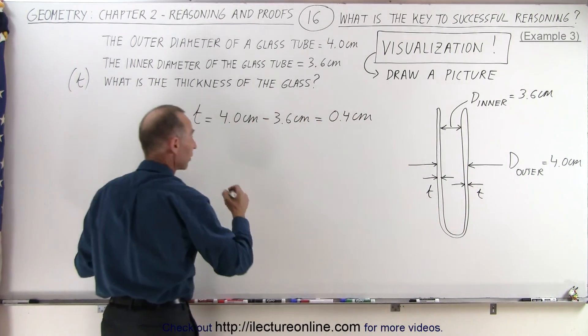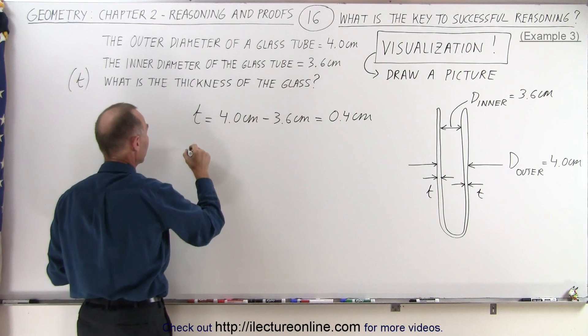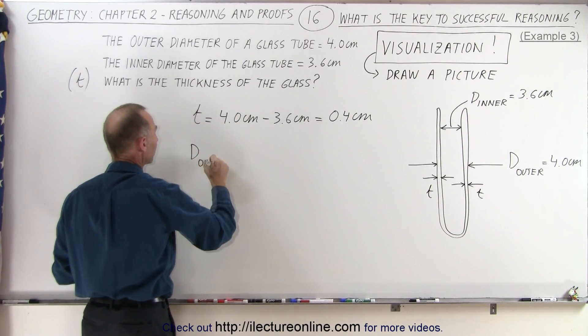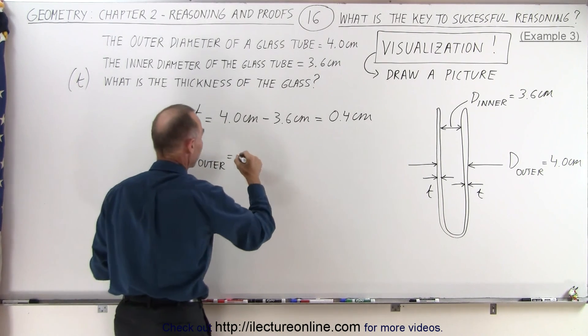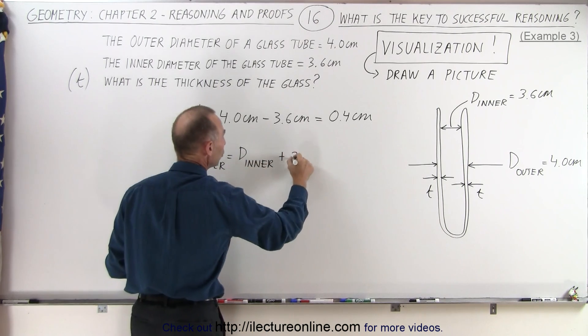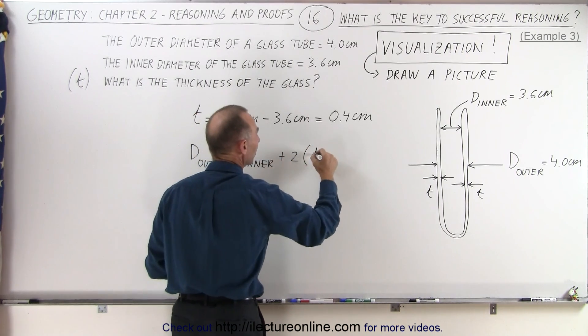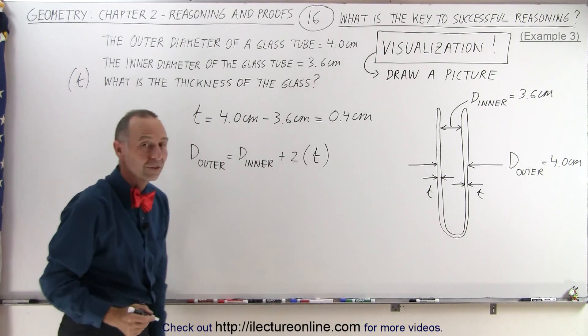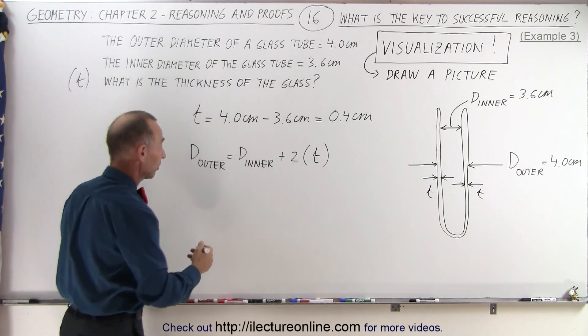So, in other words, if we draw an equation based upon what we see here, that the outer diameter is equal to the inner diameter plus 2 times the thickness of the glass. So, therefore, if we solve for the thickness of the glass...